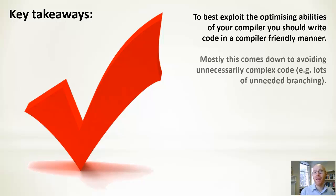Key takeaways. To best exploit the optimizing abilities of your compiler, which we want to do, you should write code in a compiler-friendly manner. That makes sense. We're doing something to help the compiler because it will then ultimately help us. We stand to benefit. How do you do this? Well, you can get into a lot of different things, but a simple rule of thumb is to avoid writing unnecessarily complex code. Don't branch and have jumps going left, right and center. Just write it as simple as the thing can be. And in doing that, you'll probably help the optimizer understand what you have written.